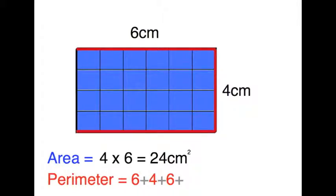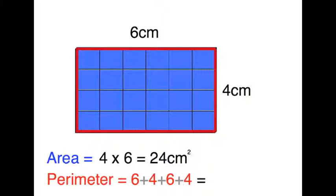So six plus four plus six, and all the way up the side there. And he's walked around the whole shape. Six plus four plus six plus four equals 20 centimetres. And that's the difference between area and perimeter.